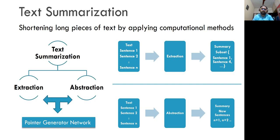Extraction and abstraction both have their own advantages and disadvantages. Extractive summarization will give you quick results but not necessarily accurate results — it can't generate its own insights. Whereas the abstraction technique is difficult to implement but gives better results. It gives intuitive results which look like as if humans are generating a summary. We can combine the advantages of both techniques and go for a new technique called the pointer generator network.